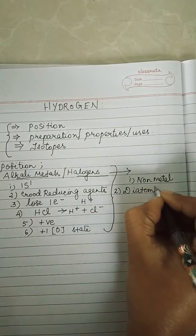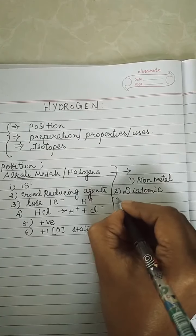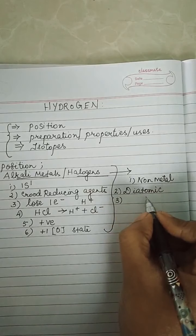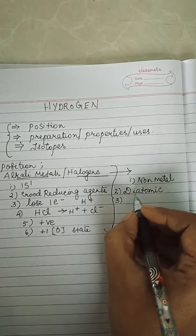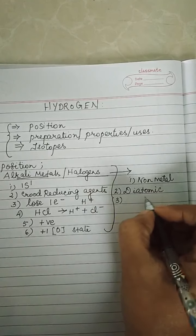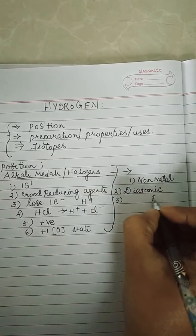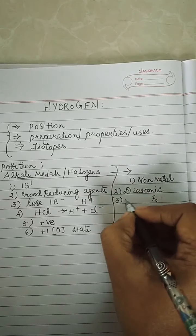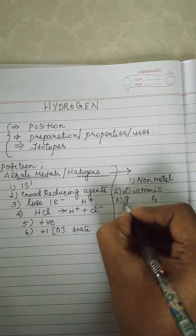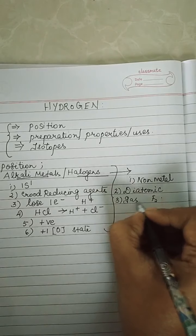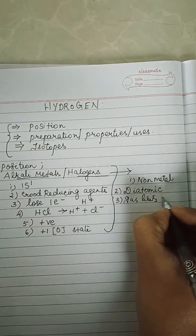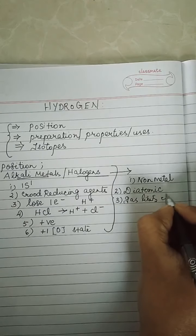So hydrogen has the ability to form a diatomic molecule. It is a gas like halogens — fluorine, chlorine, etc. It is a gas like fluorine and chlorine gas.